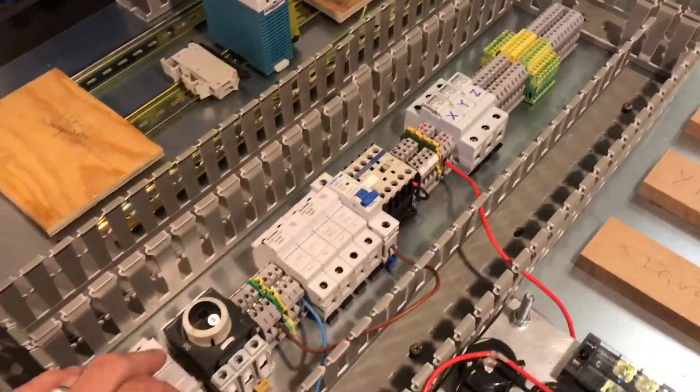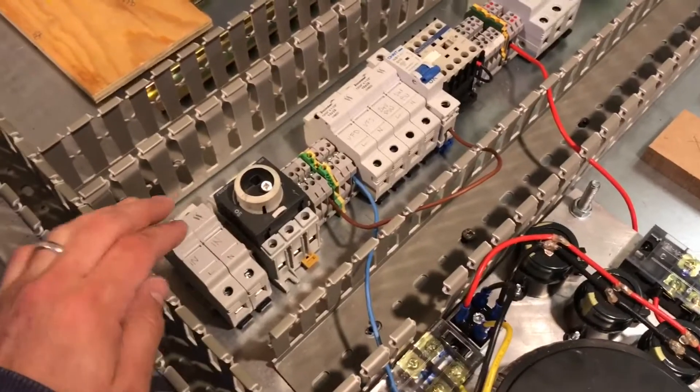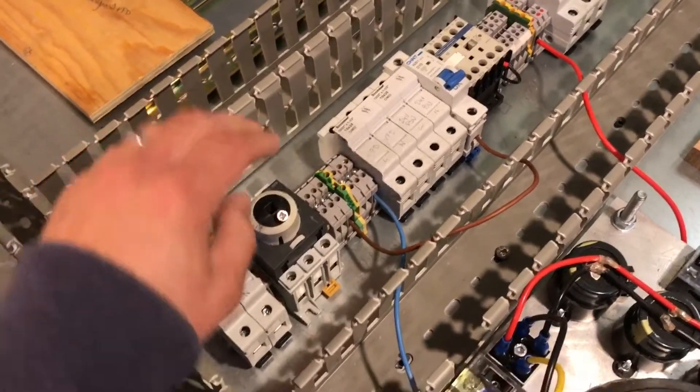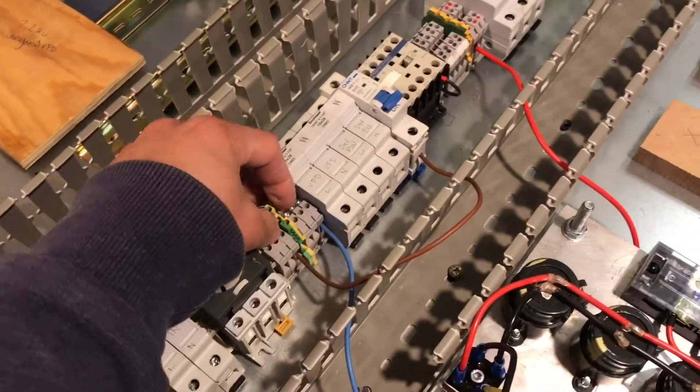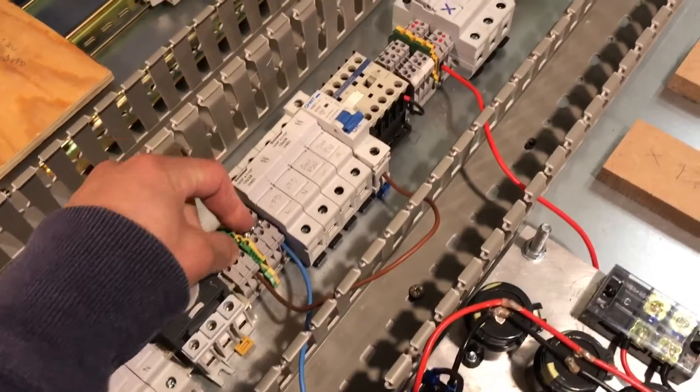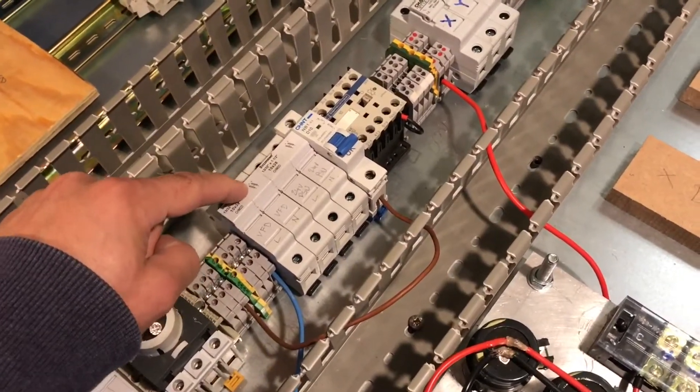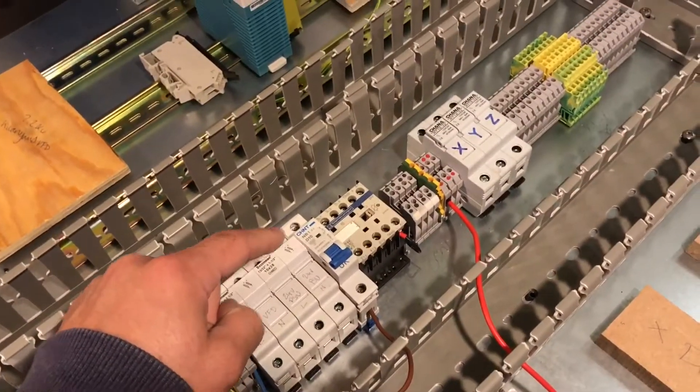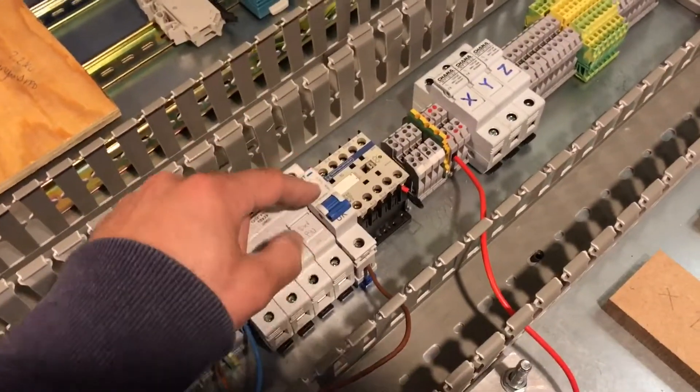So mains into the fuse here, then through the rotary switch, and then into these terminal blocks which is the mains distribution. Then there's fuses for the VFD, fuses for the 24 volt power supply which is up there, and the miniature circuit breaker and contactor for the 80 volt power supply which is down here. So mains comes in, goes through these to the VFD which will sit up here.